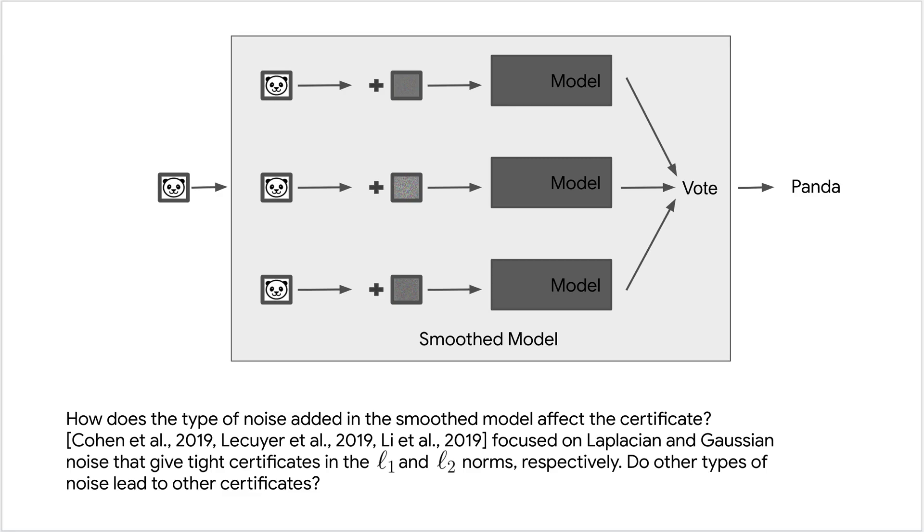Randomized smoothing uses concentration of classification arguments to prove that an input is robust to adversarial noise if most of these inputs agree on classification. Cohen and Lecuyer focused on using Laplacian and Gaussian noise to prove certificates in the L1 and L2 norms. So in this paper, what we ask is: do other types of noise lead to different certificates?